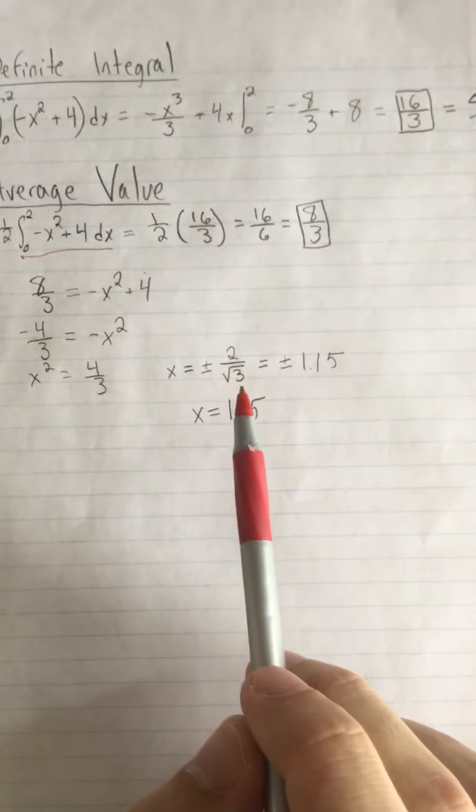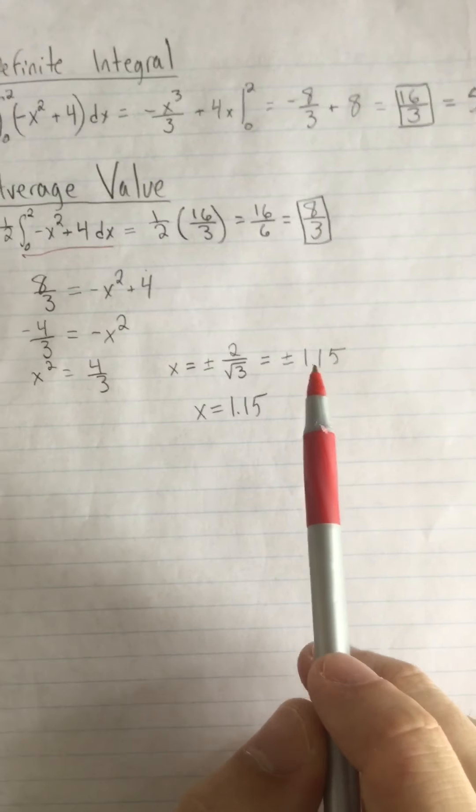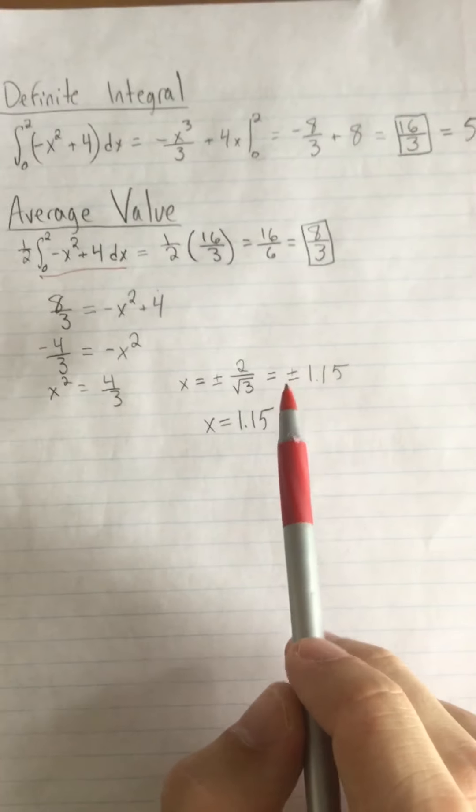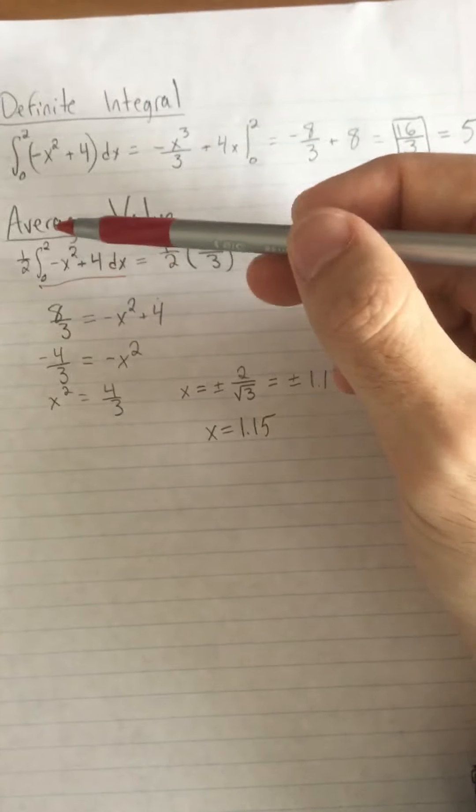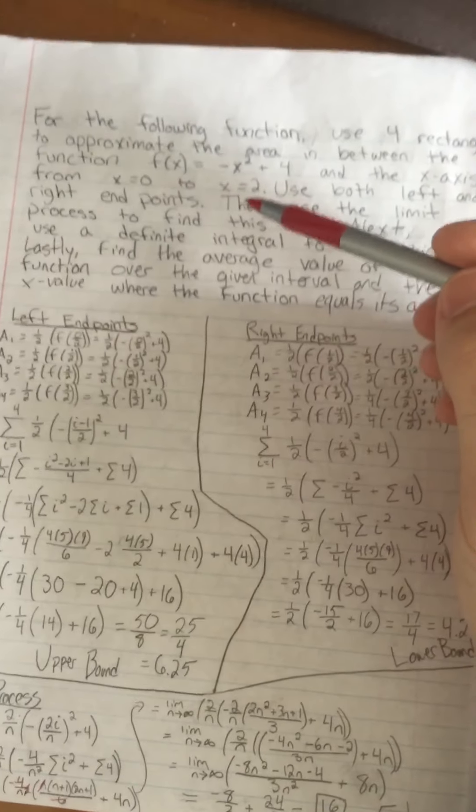So I am just setting the equation equal to eight thirds and solving for x. When I solve for x, I get this plus or minus 2 over root 3, which is 1.15. The reason that I only looked at the positive value, or I only took the positive value, was because we're looking at this from 0 to 2. So that negative 1.15 is not on our interval, so we don't include that.